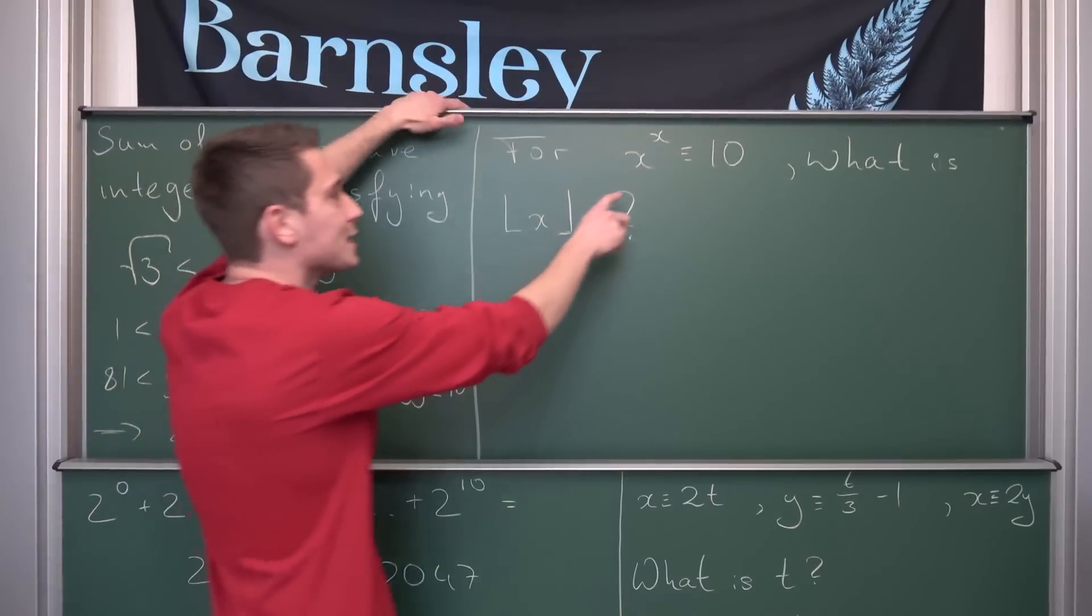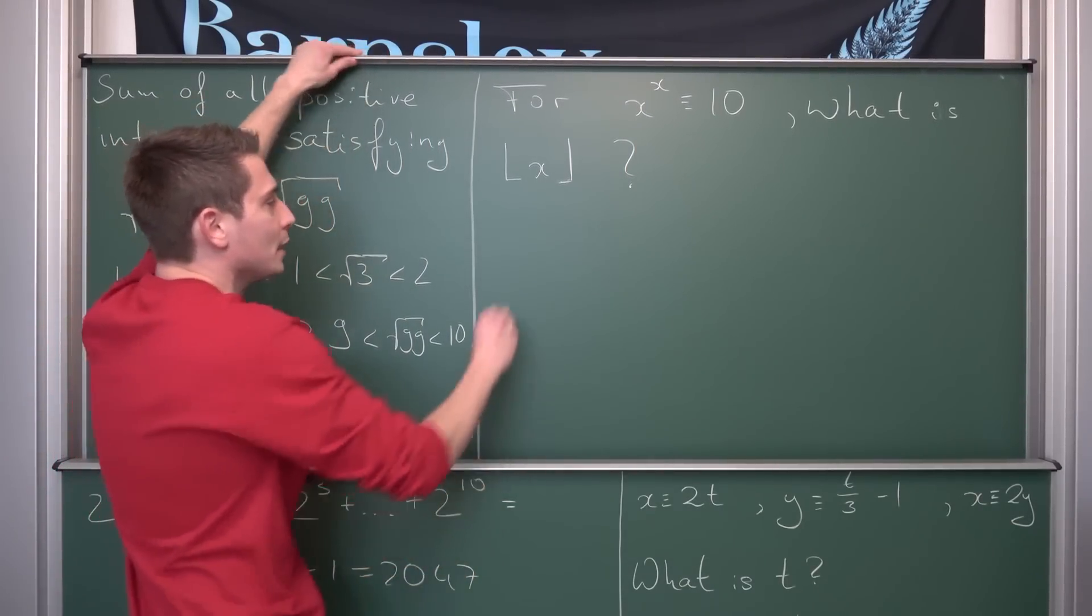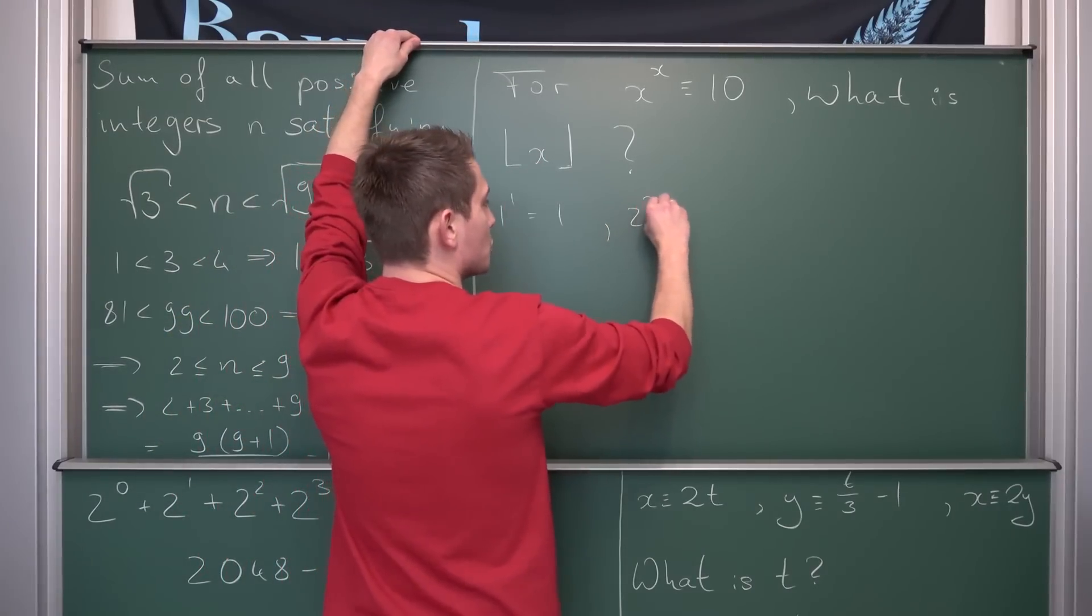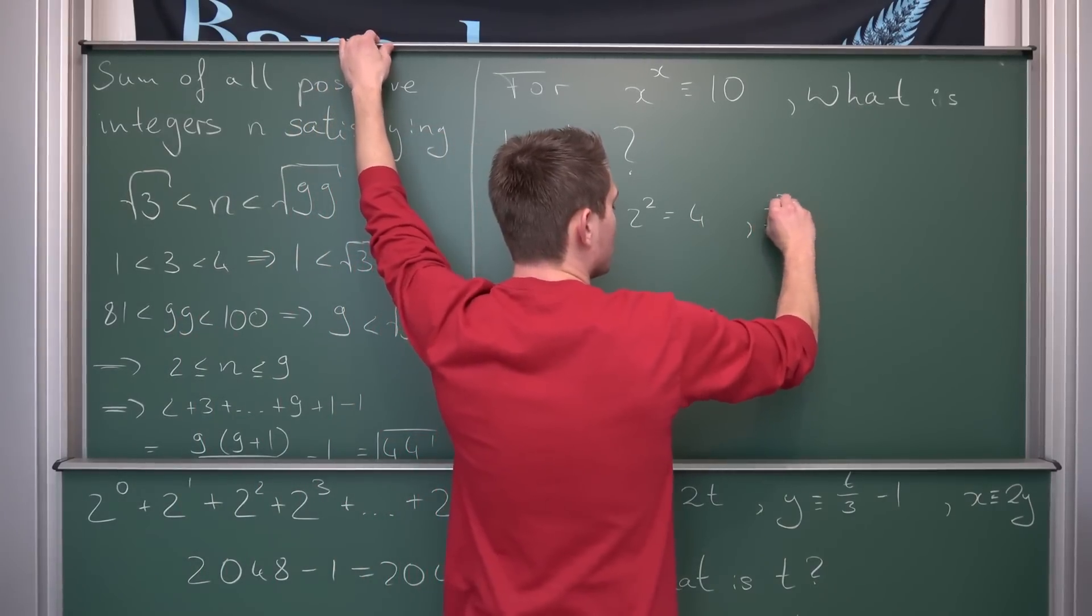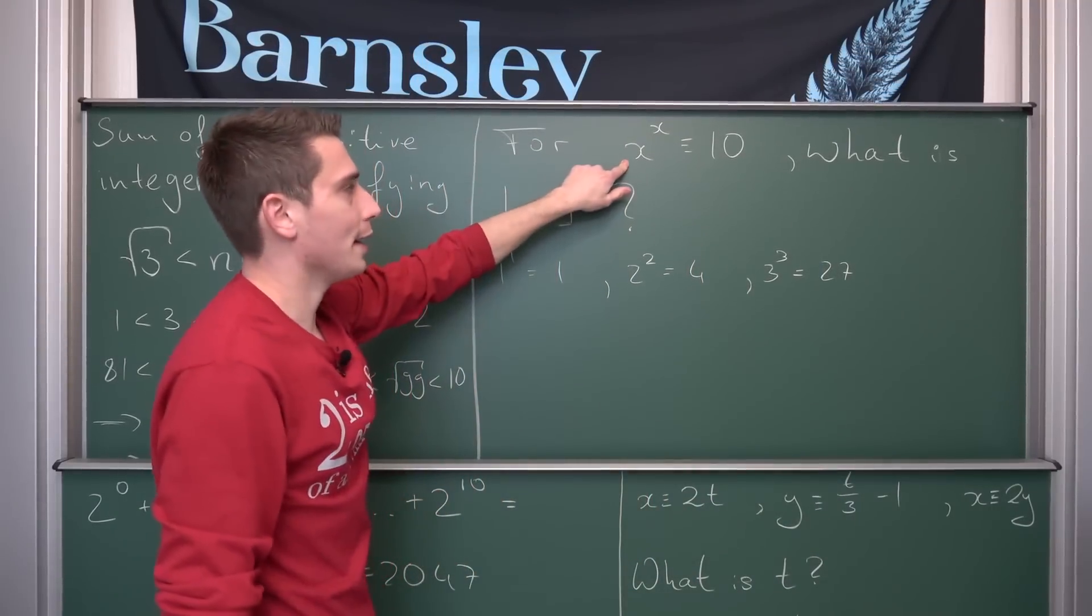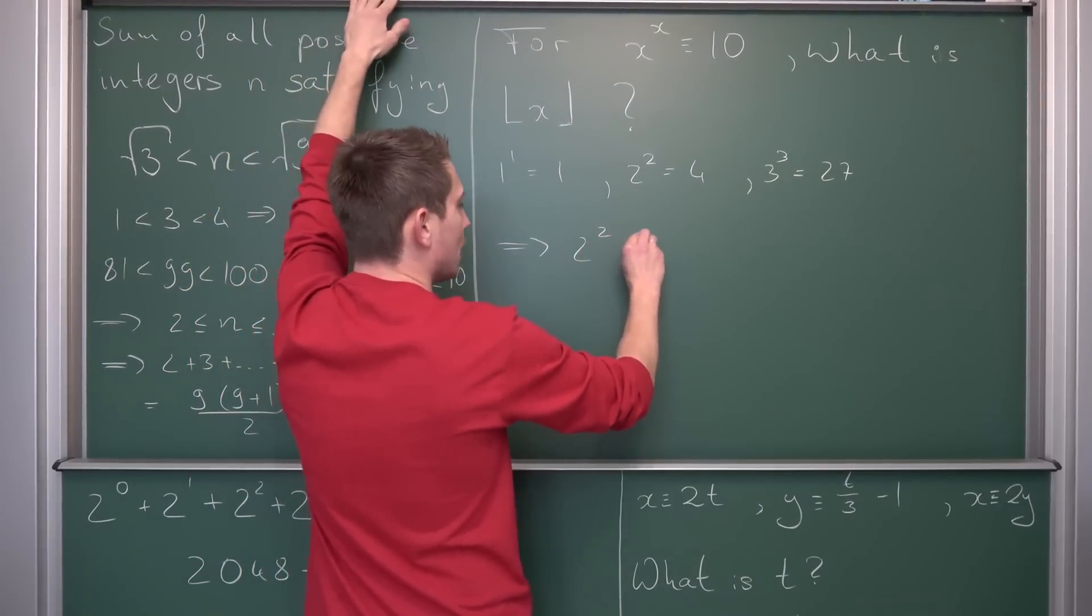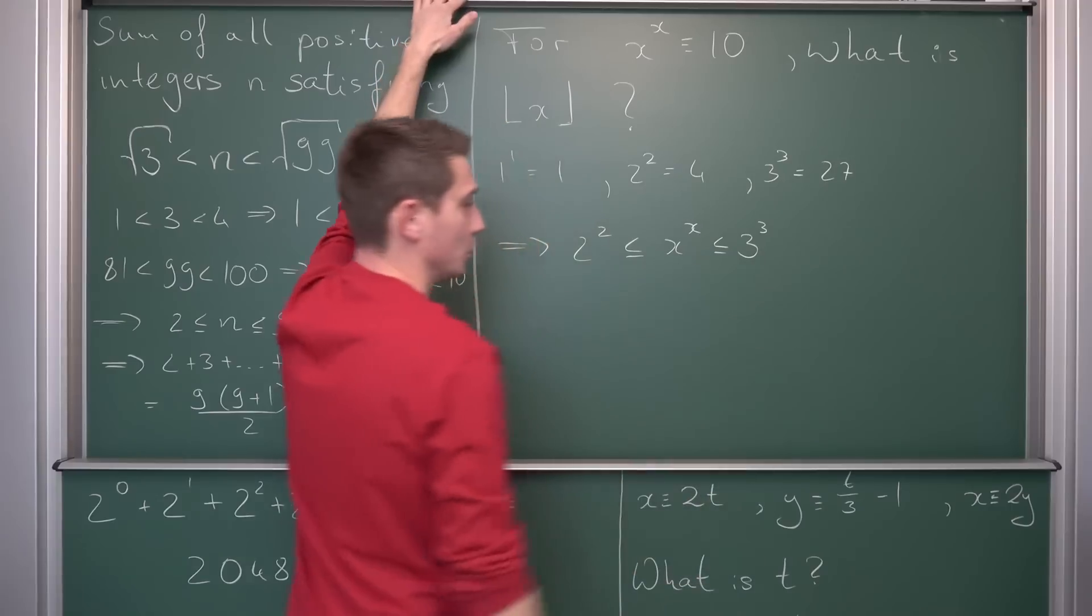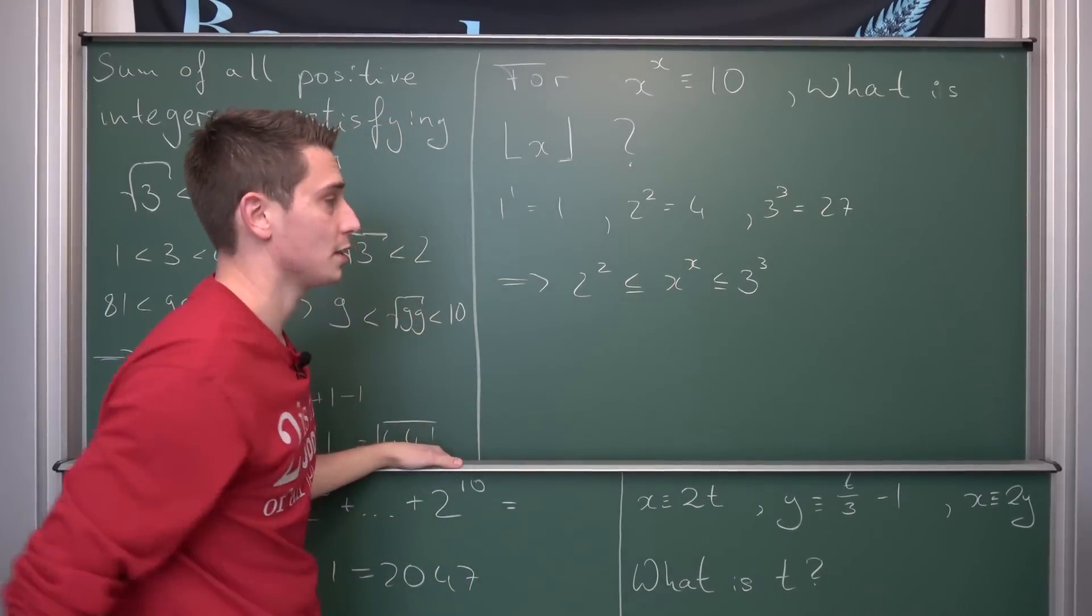So let us go through the process here. I mean x to the x power is equal to 10, so let us bound x to the x power in some way again. I mean 1 to the 1st power is nothing but 1. Now what about the next x to the x power? This is 2 squared is hence nothing but 4. Okay this is less than 10. And what else do we have? I mean we have 3 to the 3 power. 3 squared is 9 times 3 is going to give us 27. Meaning overall our x to the x power which is equal to 10 is somehow bounded between 2 squared and our 3 cubed.